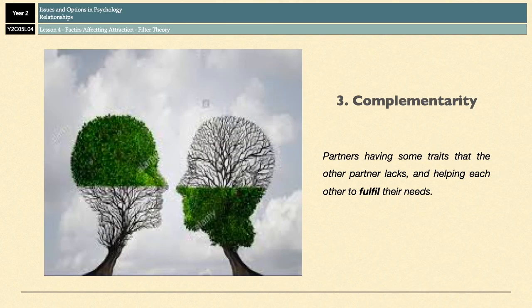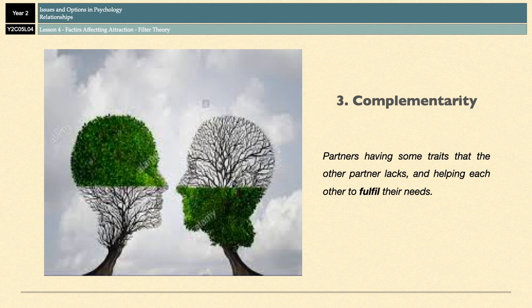The final filter is complementarity. Complementarity refers to each of the partners having some kind of trait or characteristic that the other partner lacks, and refers to the partners helping each other to fulfill their needs. For example, one partner might enjoy meeting new people and being socially proactive, whereas the other might be quite shy and anxious in social situations. Partner A will take over the role of introducing them and getting them involved in what's going on, which works quite nicely for both of them. These two people complement each other and help meet a need the other one is lacking.